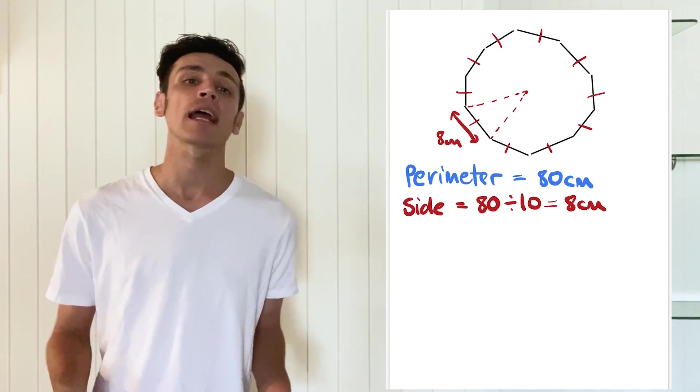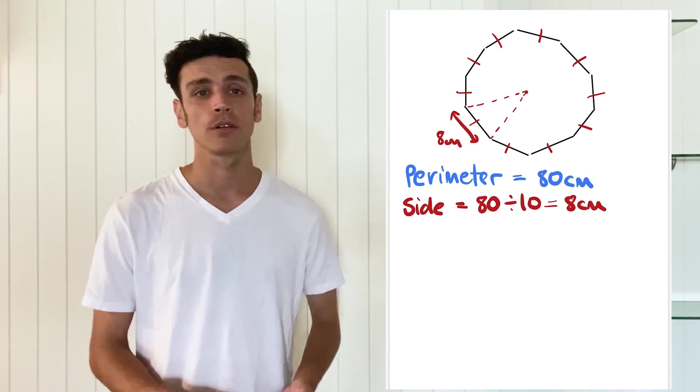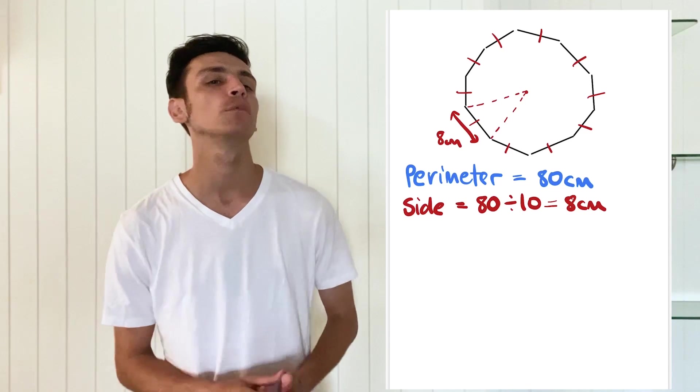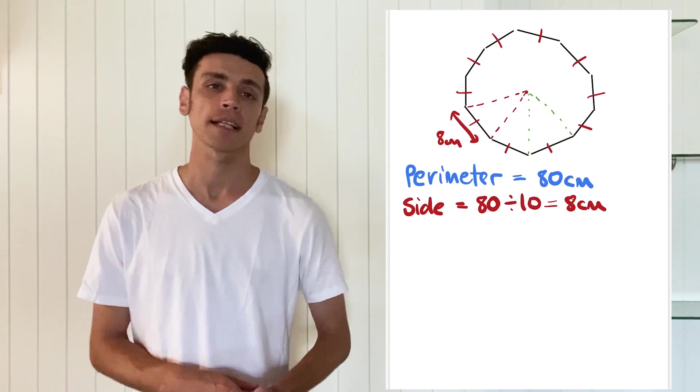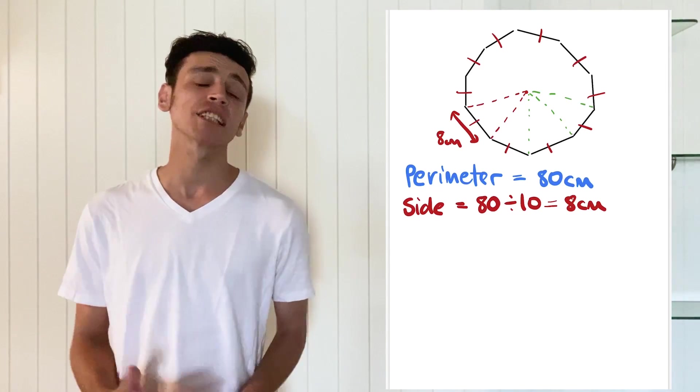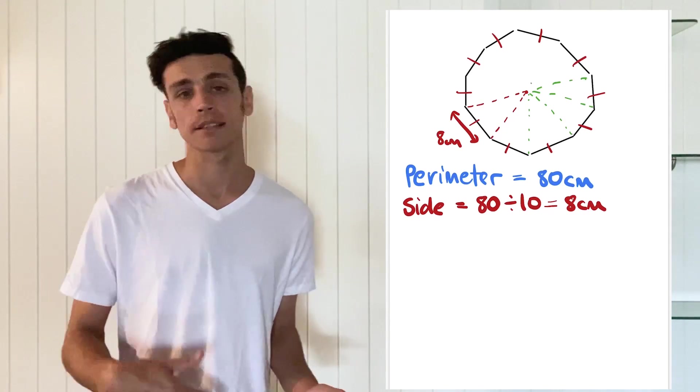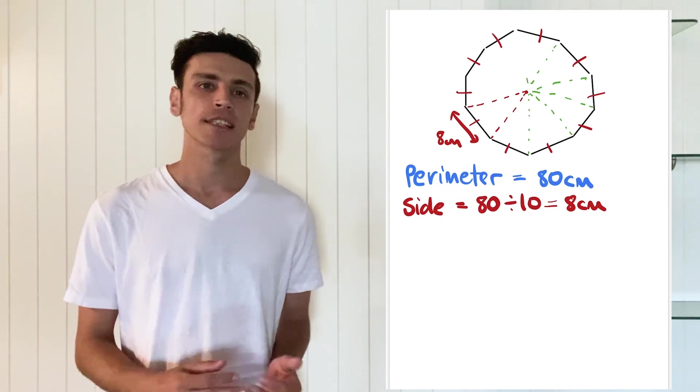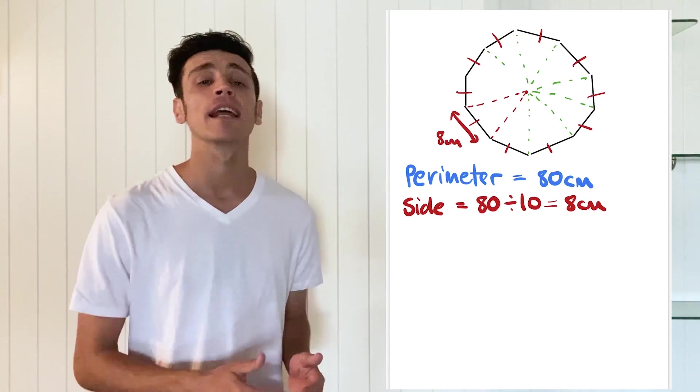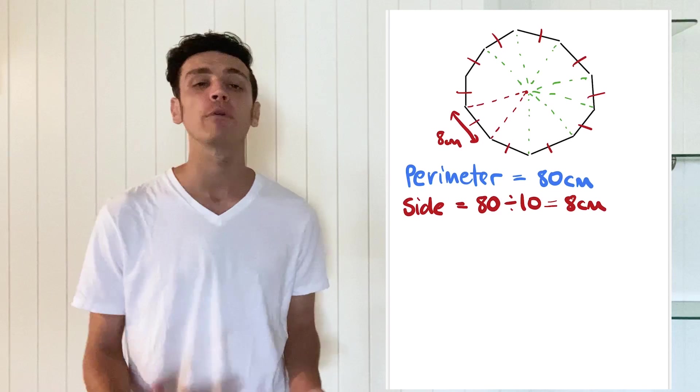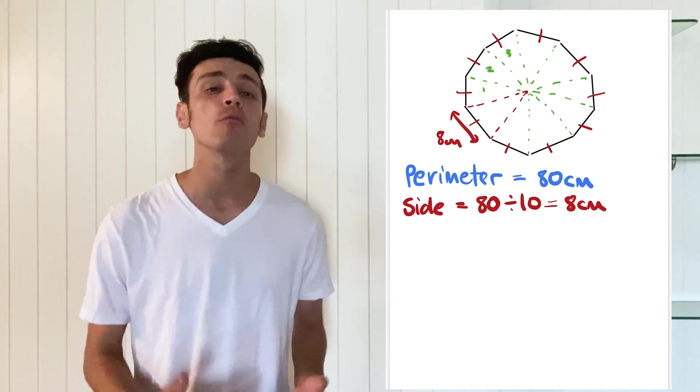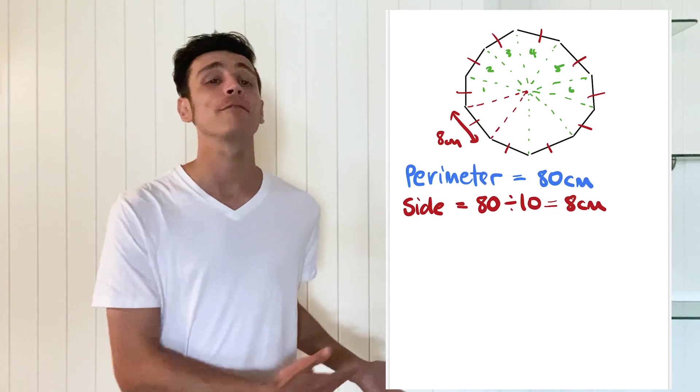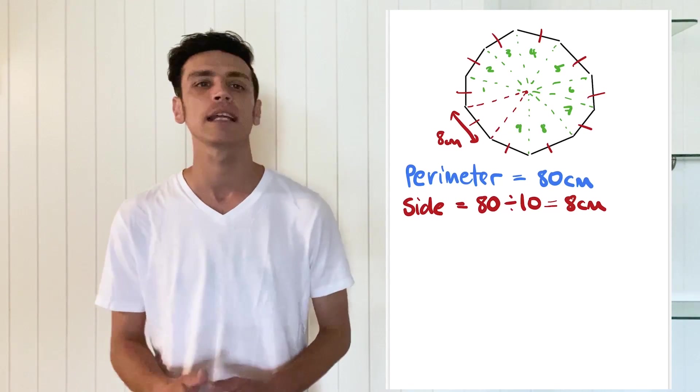And what we can actually do is create triangles. So if we create two lines and we join it into the middle section, which again with information given to the students in the question, you can actually make a triangle like this. So we can actually make 10 of these, can't we, because they're all even. So now let's look at the triangle individually because then what we do is we'll work out the area of the triangle and then we'll multiply it by 10 because we're going to have 10 of these.